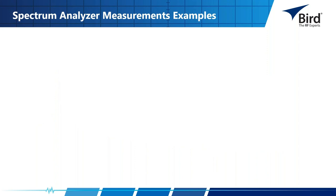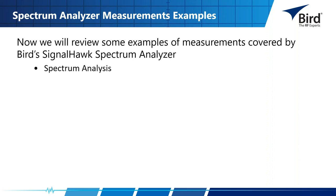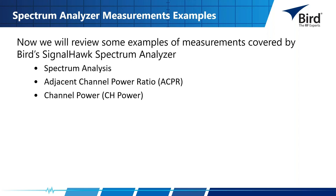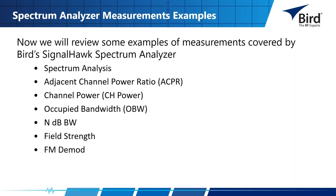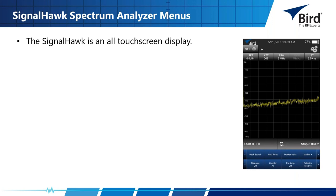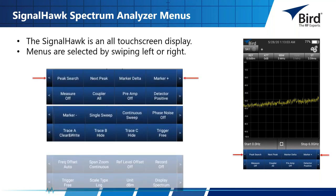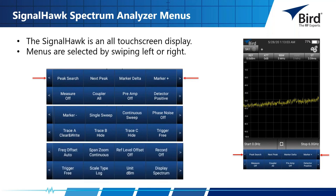The Bird SH60S will perform spectrum analysis, adjacent channel power ratio (ACPR) measurement, channel power measurement, occupied bandwidth (OBW) measurement, NdB down bandwidth measurement, field strength measurement, FM demodulation, and spectrum mask building.